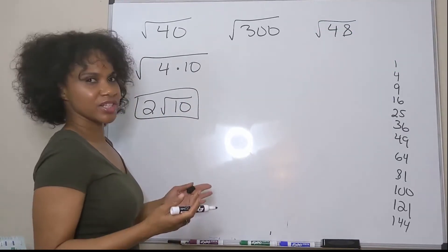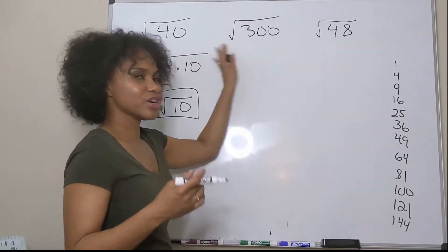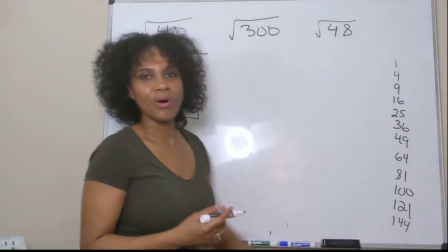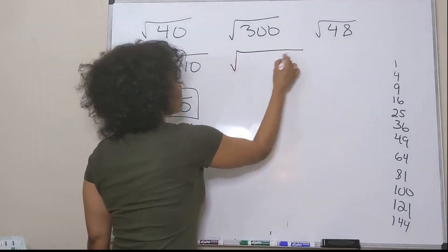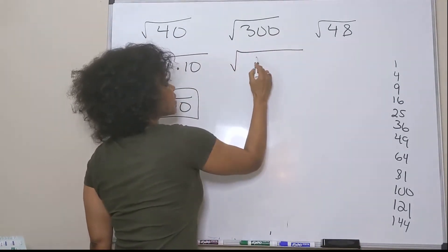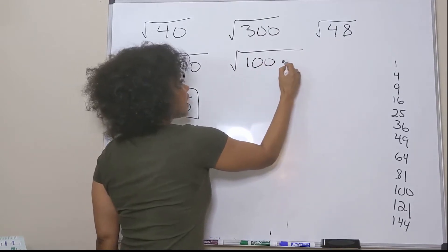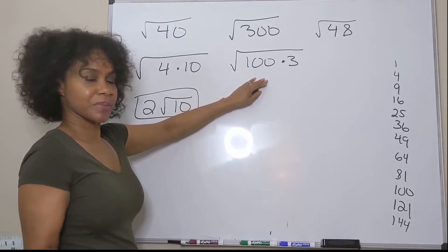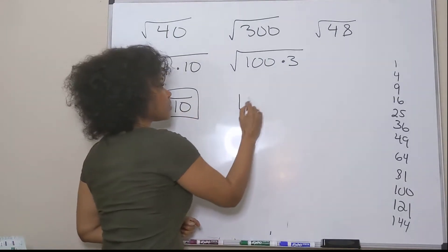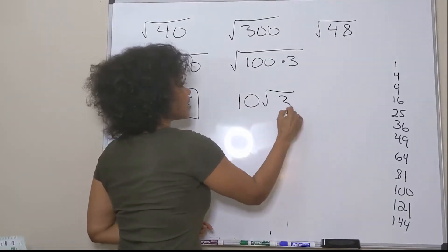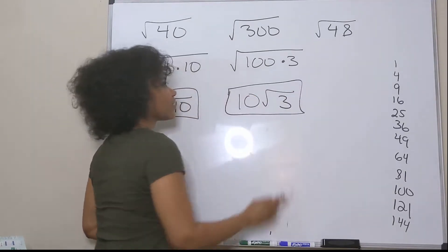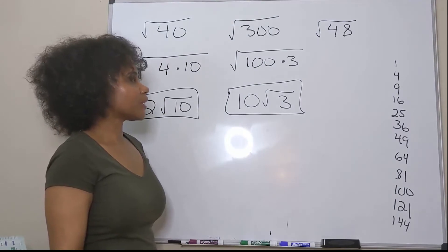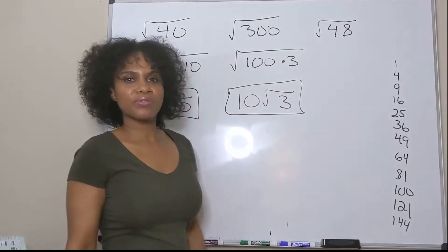Let's try the square root of 300. The easiest thing to do when you have a number in the hundreds is to use 100 as the perfect square. So I break 300 into 100 times 3. I take the square root of 100, which is 10, and leave my 3 under the radical. That's the square root of 300 written in simplest radical form.